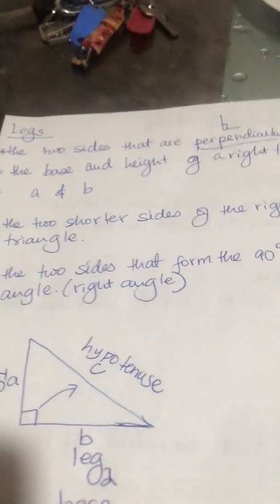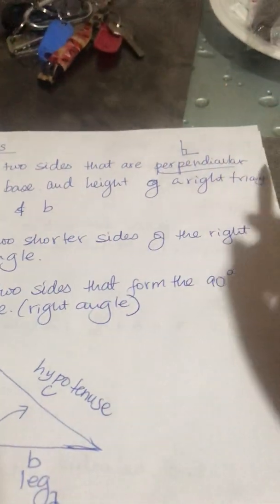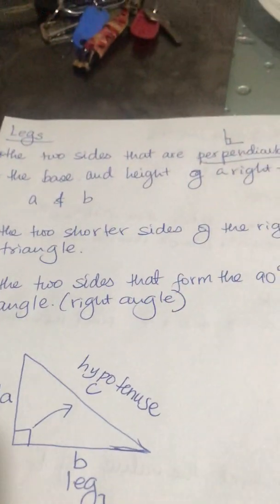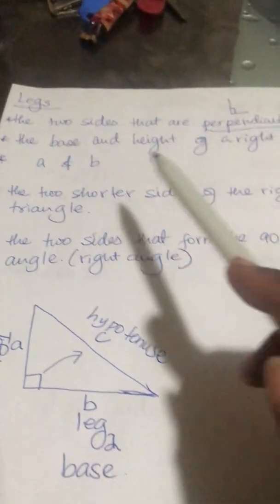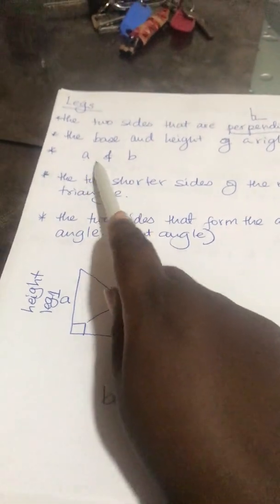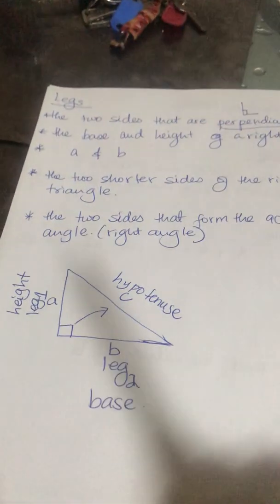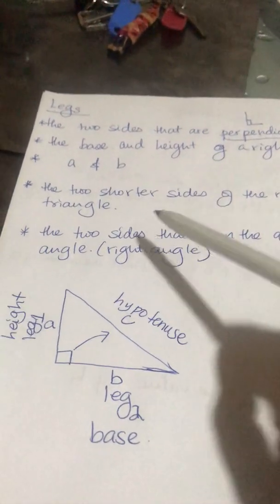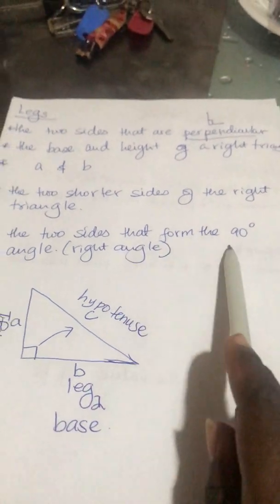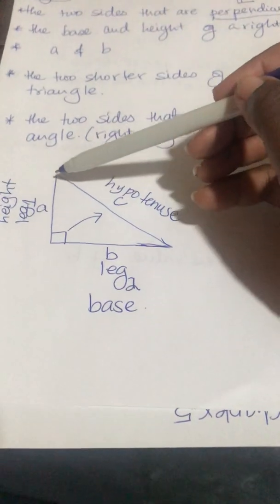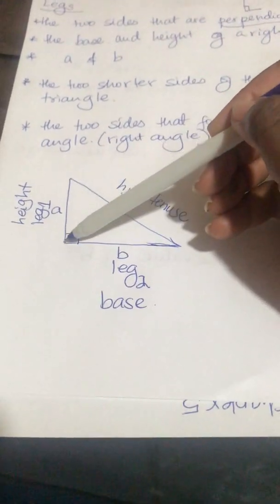So all these terms can be used to describe legs. The question might say find the legs, find a and b, find the base and the height of the triangle — you should know you're looking for a and b. Or find the two perpendicular sides — it is telling you to find the legs. The two shorter sides a and b have to be smaller than c. Both of them have to be smaller than c.